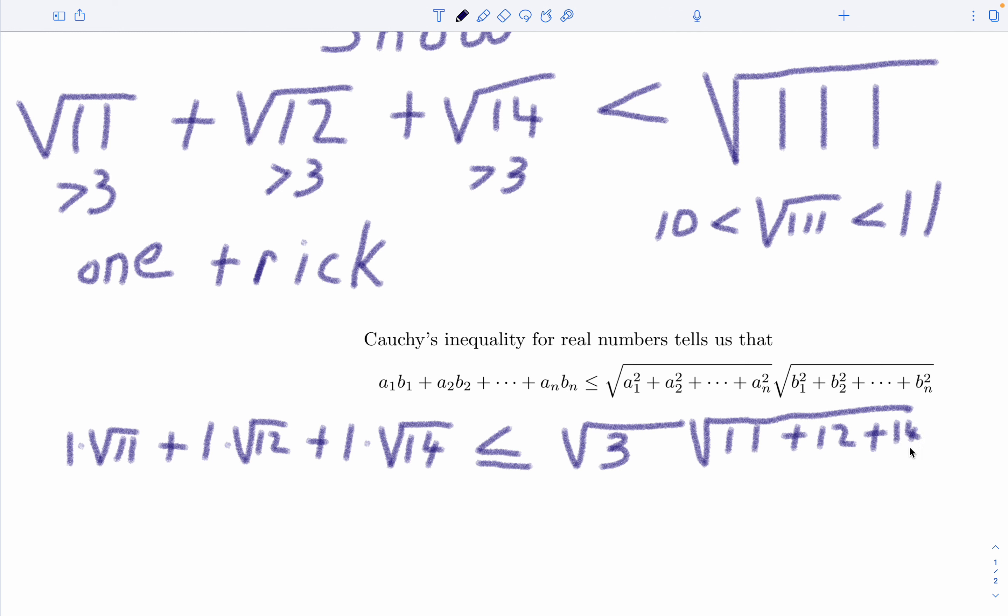And again folks, the b sub i's were the square roots. Over here the b sub i's are getting squared. Now let's see, what is all this equal to? So we get less than or equal to, this is going to be the square root of 3 times 37, and of course that is equal to what we were trying to establish.